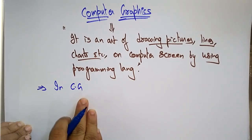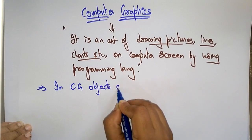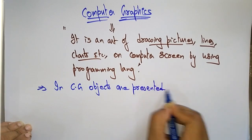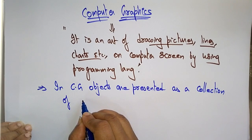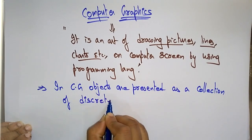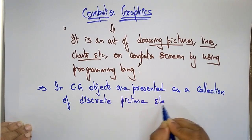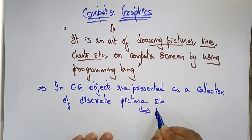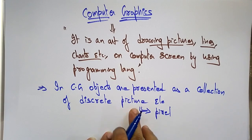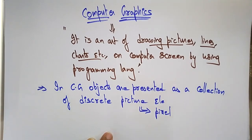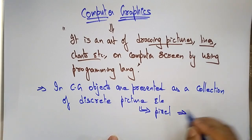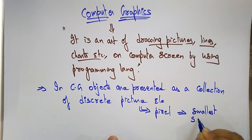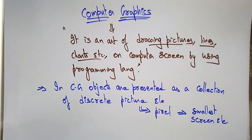In computer graphics, objects are presented as a collection of discrete picture elements. Those picture elements are called pixels. A pixel is nothing but the smallest screen element. So graphics are generated by controlling these pixels.